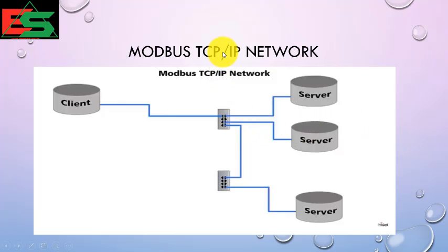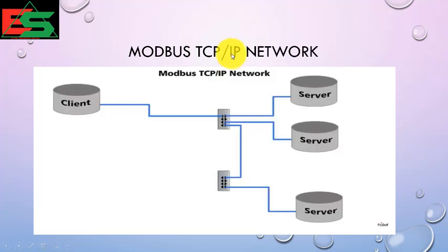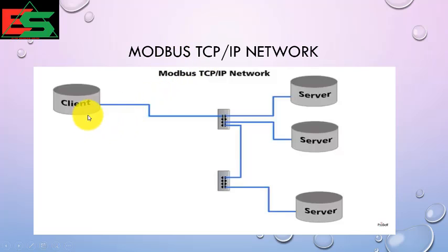For TCP/IP, one device will be the client and the other will be the server. This is mostly used in other PLC systems. In Delta PLC, mostly we use RS-485 and RS-232.